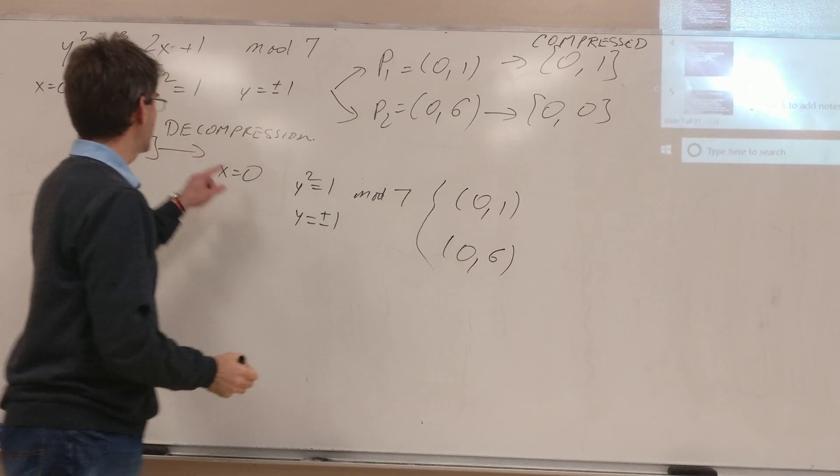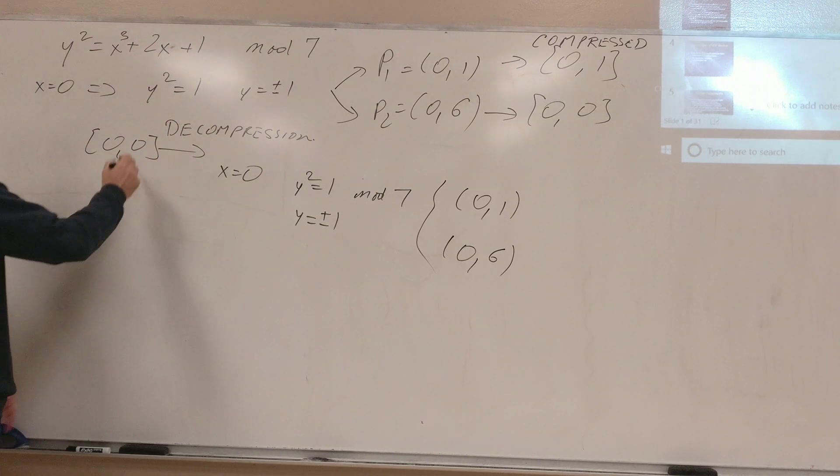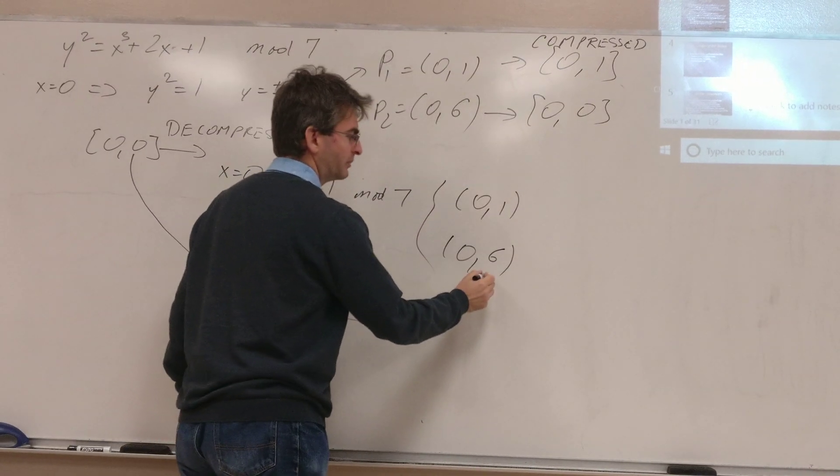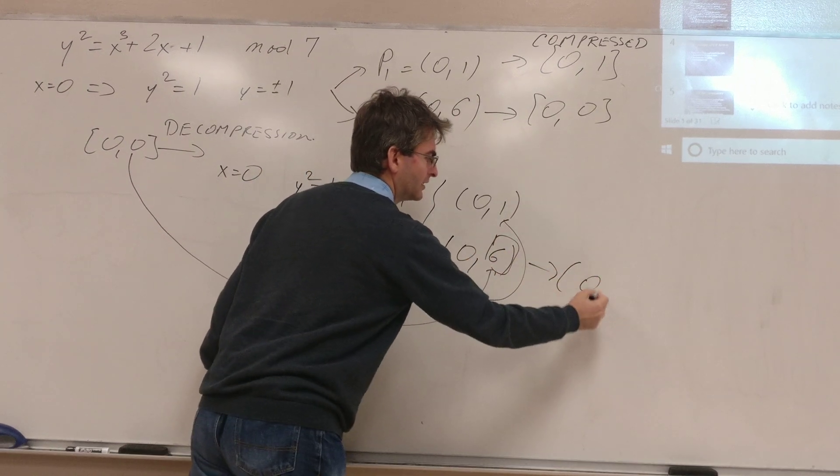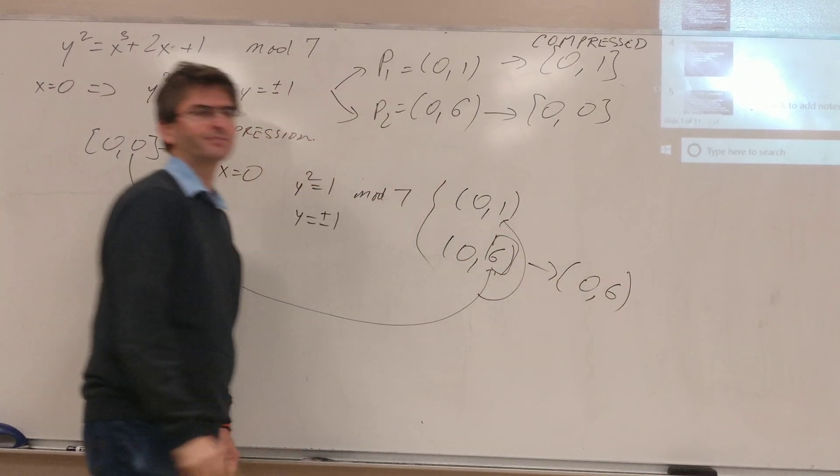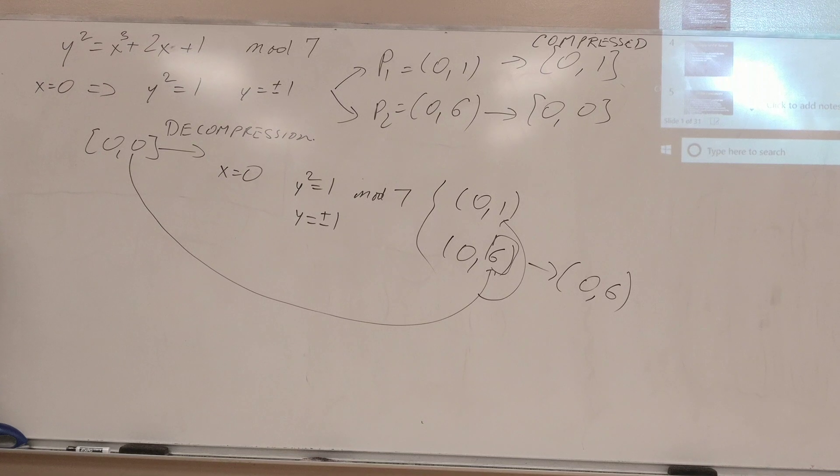And now you compare this bit 0 with the last bit of the two values, and say this one is a match, therefore (0,6). And that's a bit simple, too simple and trivial, but that's it.